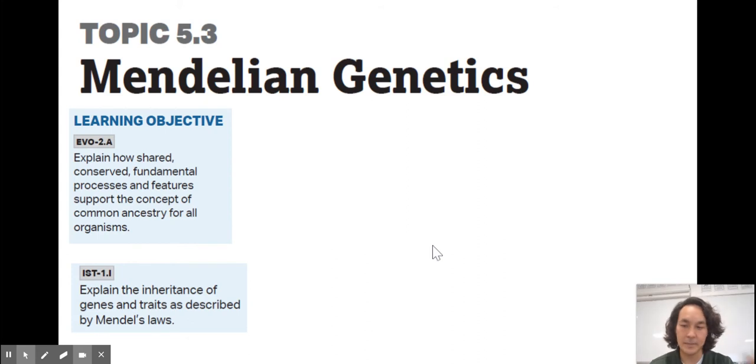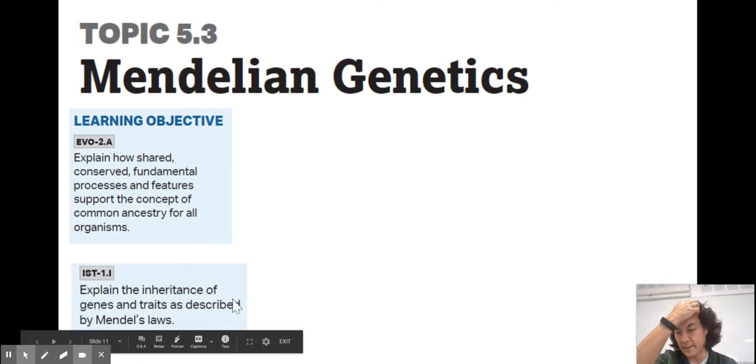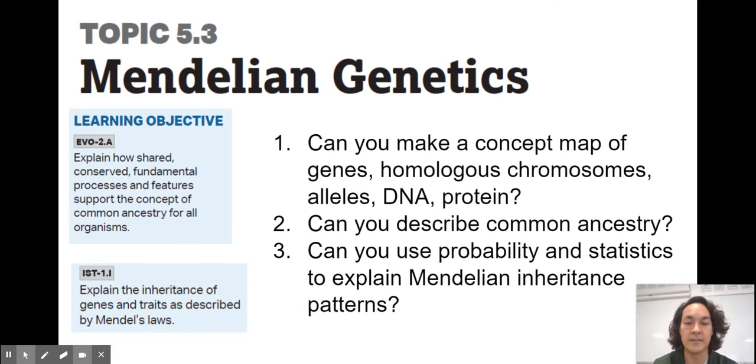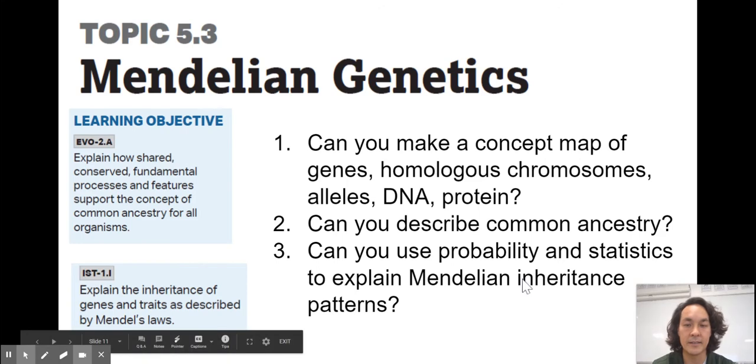Topic 5.3 is dealing with Mendelian genetics. It starts with kind of a review that DNA and proteins and RNA are common throughout all life and ribosomes as well. So, therefore, these genes can be passed on in DNA and it can be read throughout all life forms. And then we get into the work that Mendel did. And we see these Mendelian laws. So, can you make a concept map with these words? Genes, homologous chromosomes, alleles, DNA, protein. Can you describe common ancestry? And then can you use probability statistics to explain Mendelian inheritance? I did not in this screencast go over chi-square. I'll do that in a separate one with biostatistics, but you'll need to be able to do that here with Mendelian genetics.